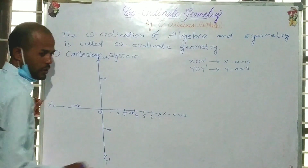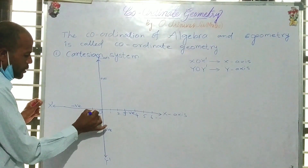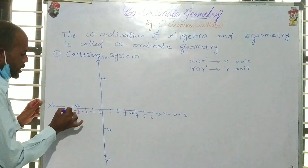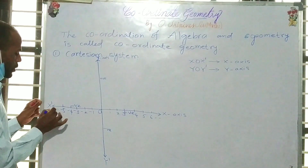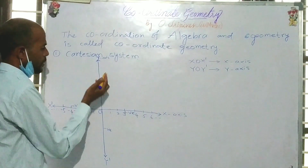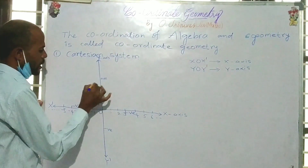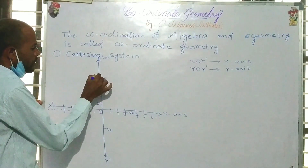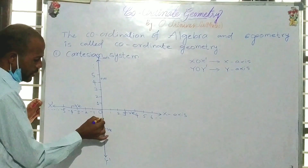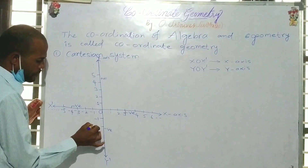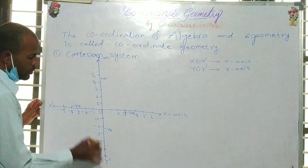On the left side of the origin we have negative values: minus 1, minus 2, minus 3, minus 4, minus 5, and so on. Above the origin on the y-axis we have positive values, and on y-dash we have negative values: minus 1, minus 2, minus 3, minus 4, minus 5, and so on.